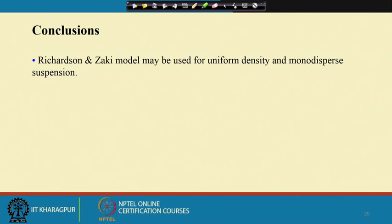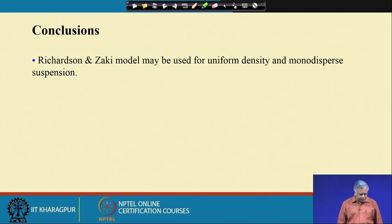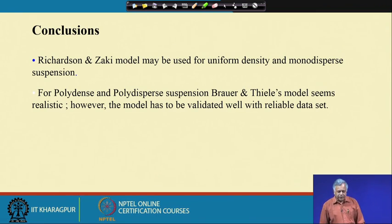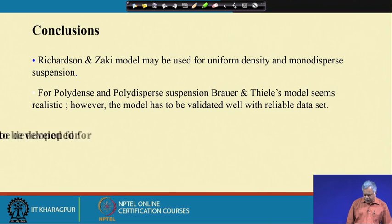To conclude: the Richardson-Zaki model may be used for uniform density and mono-dispersed suspensions. For polydense and poly-dispersed suspensions, the Brouwer-Thielis model seems more realistic, but it still needs to be validated with reliable datasets — which is difficult due to the intrinsic challenge of measuring hindered settling velocities in crowded conditions. A reliable hindered settling model for practical use is yet to be developed, so be careful about which settling velocity model you use when designing or optimizing mineral processing equipment.